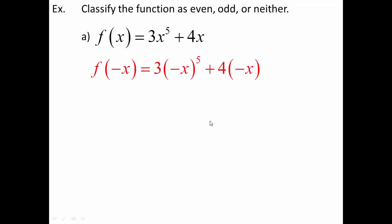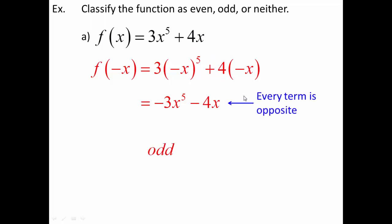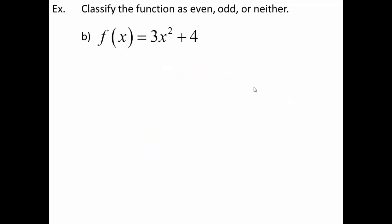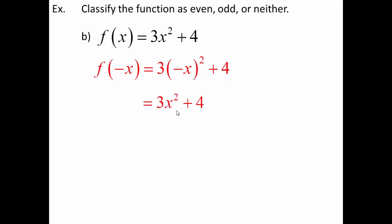To classify, we plug in negative x anywhere we see x and simplify. For the first example: negative x to the fifth power — a negative times itself five times is still negative, so that 3x⁵ becomes negative 3x⁵, and positive 4x becomes negative 4x. Every term is the opposite of what we started with, therefore this is an odd function. For the second example: negative x squared — the square turns that negative into a positive, so we simplify right back to the original function. Therefore, this is an even function.